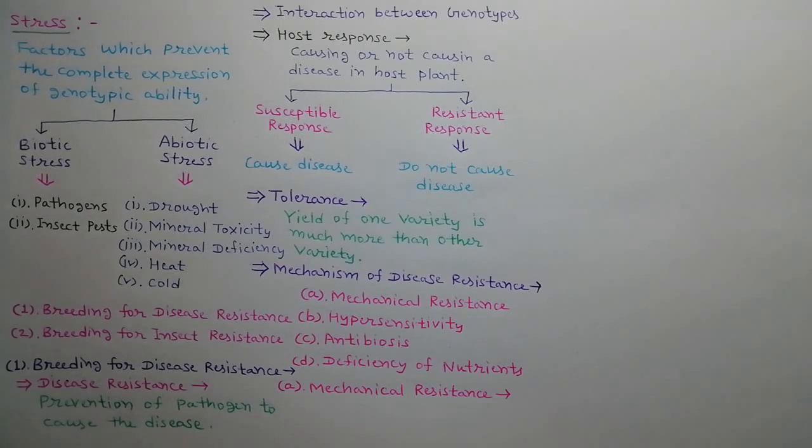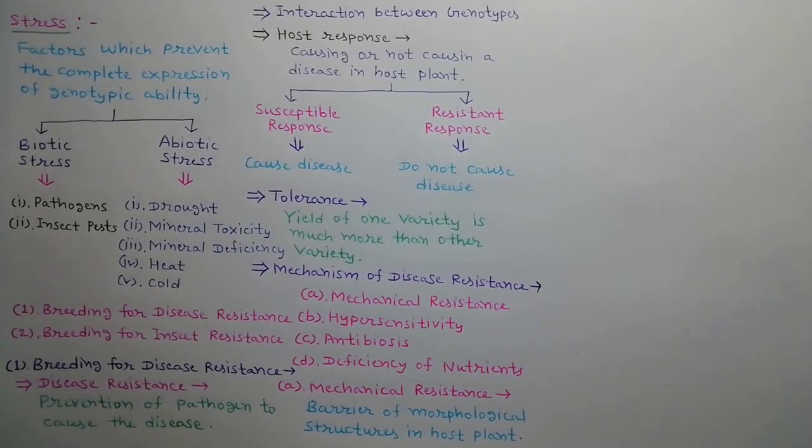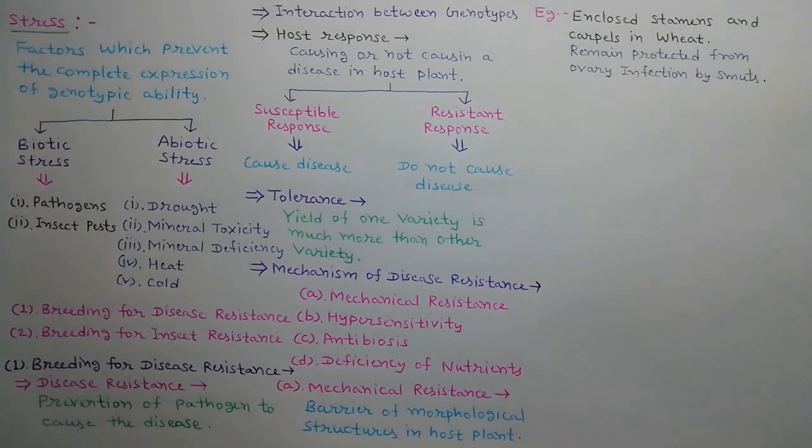The first mechanism is mechanical resistance. Host plant has special morphological structures which prevent the pathogen from causing disease. For example, in wheat, during flowering, stamens and carpels remain enclosed within glooms of spikelets. As a result, fungal spores cannot infect ovaries such as smuts.